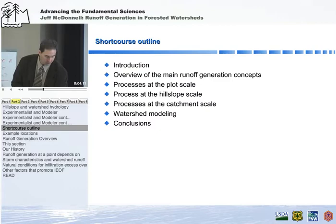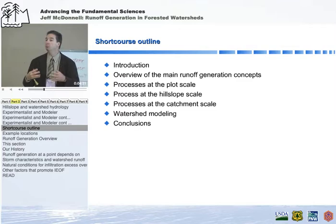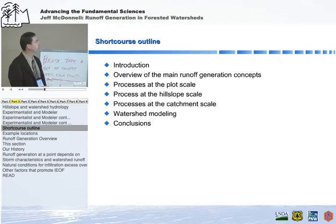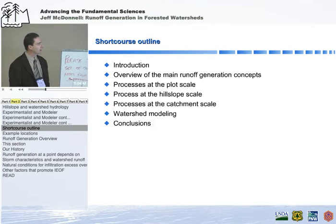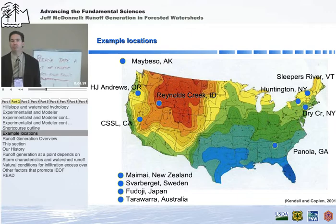We'll talk about this dialogue between experimentalist and modeler throughout, because it's important in shaping what we do in forest hydrology today. No longer are we in two separate camps — experimentalists or modelers — but often we need to do both: describe the dominant processes in a given system and model them to make predictions. We'll look at an overview of main runoff generation concepts, then processes at the plot, hillslope, and catchment scale, then watershed modeling, and then conclude.